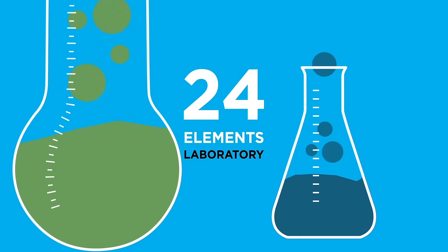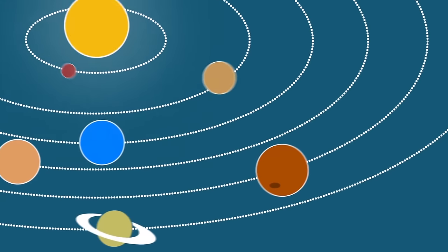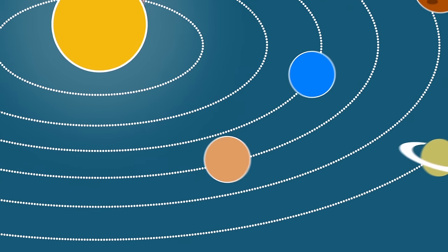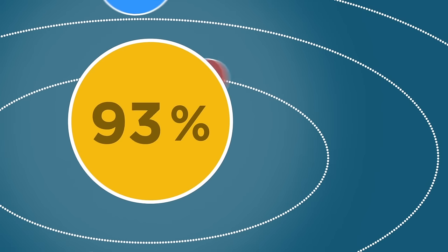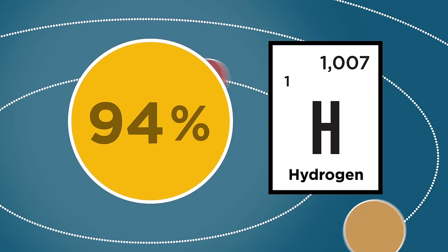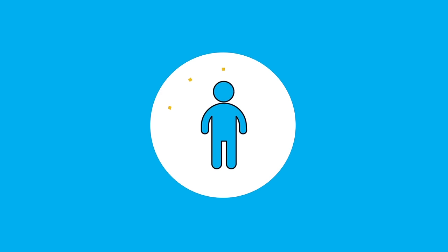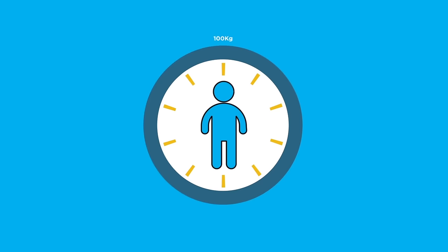118 elements may seem too little for an entire universe, but it's not. Let's see. In stars like the Sun, 94% of all the atoms are hydrogen. The human body itself is very scarce on chemical elements. For every 100 kilos of weight, 65 kilos are oxygen atoms, 18 kilos are carbon atoms, and 10 kilos are hydrogen atoms.